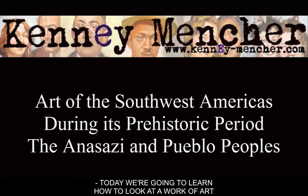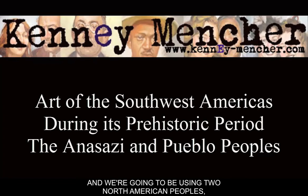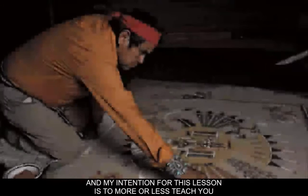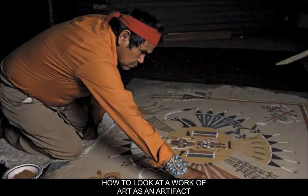Today we're going to learn how to look at a work of art, and we're going to be using two North American peoples — the ancient Anasazi and a more contemporary people called the Navajo — to do this. My intention for this lesson is to teach you how to look at a work of art as an artifact and to analyze it according to three planes of analysis.